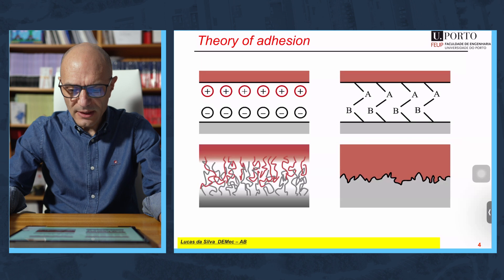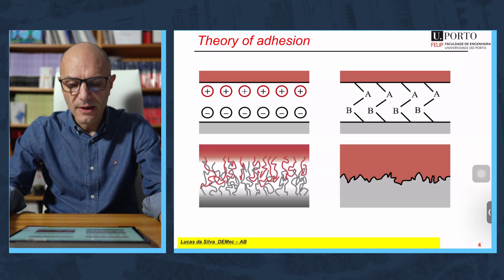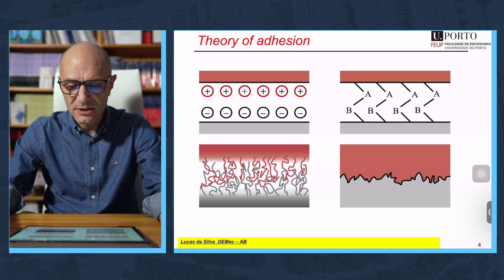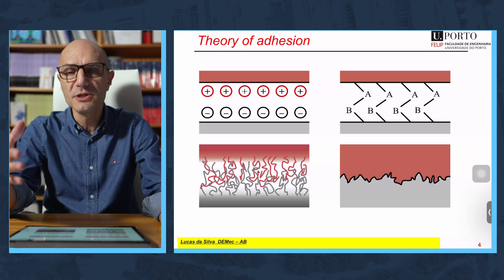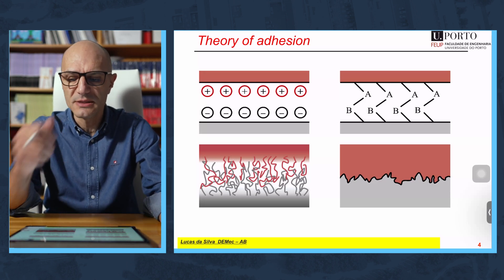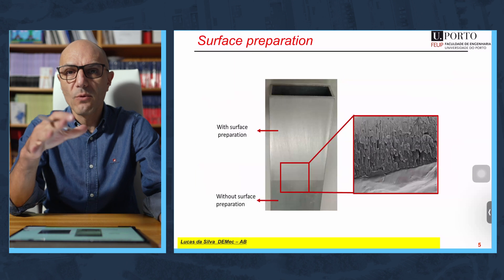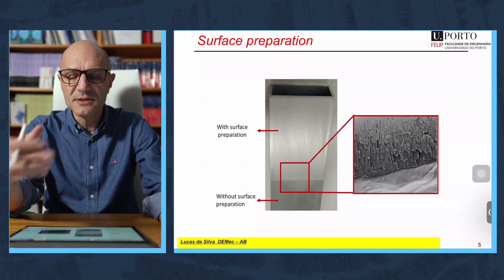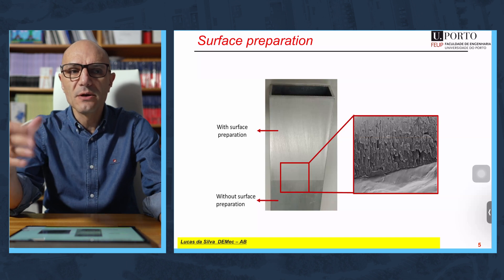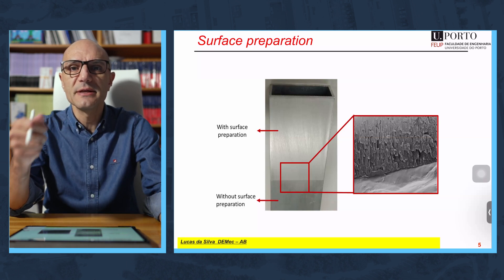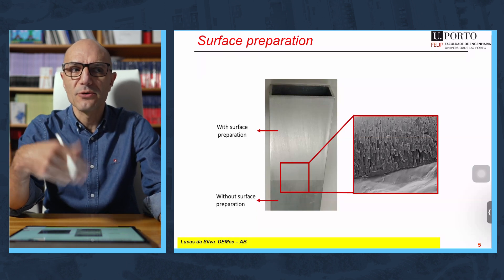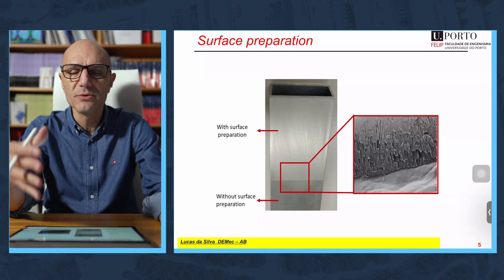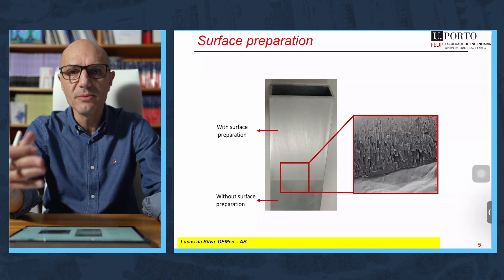In the chapter Theory of Adhesion, we will discuss the main theories of adhesion so that we understand in which conditions we have a good bond between the adhesive and the substrate. Once we understand that, we can go to the next step, which is surface preparation, and we will cover all the treatments that exist for metals and for non-metals to guarantee that the adhesive will create a good bond with the substrate and will be durable.